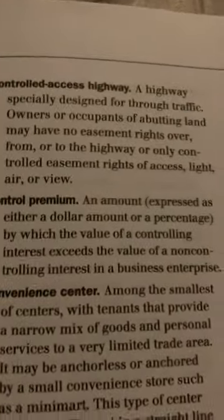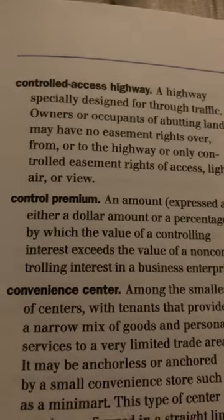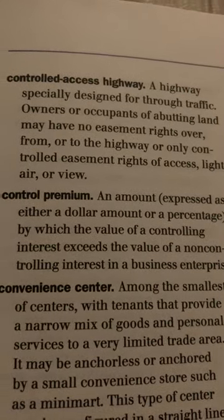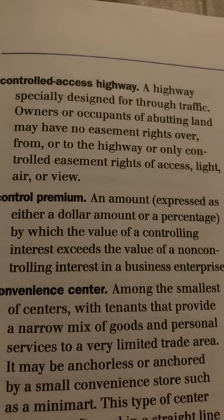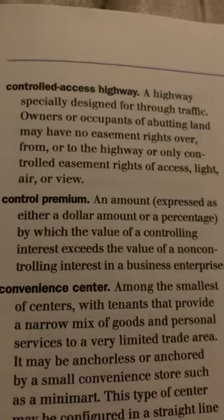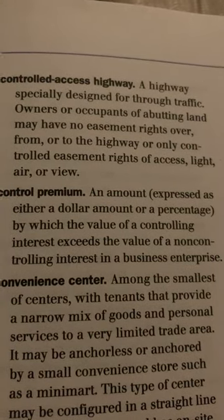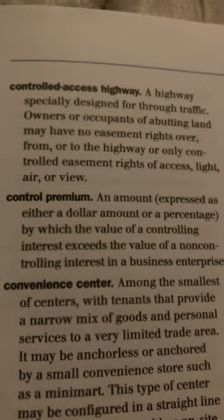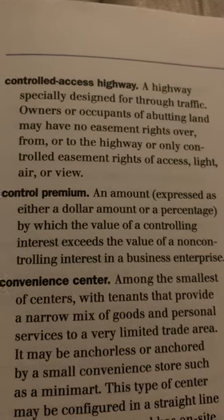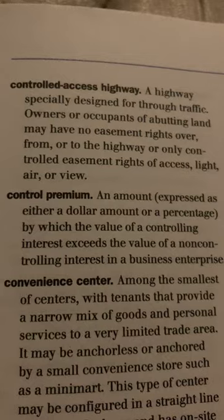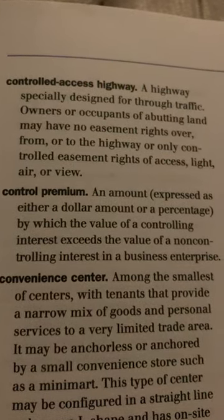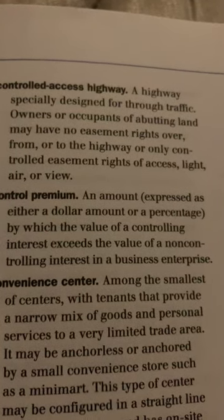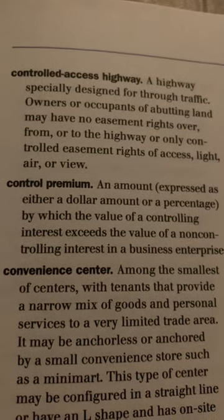Page 51. Controlled Access Highway. A highway specifically designed for through traffic. Owners or occupants of abutting land may have no easement rights over, from, or to the highway, or only controlled easements — easement right of access, light, air, or view.